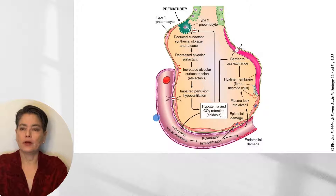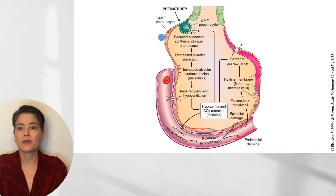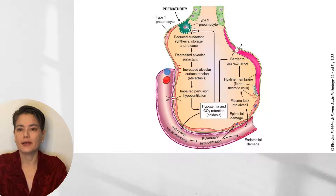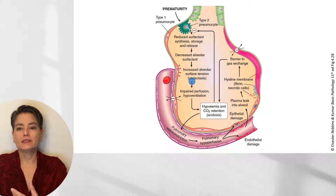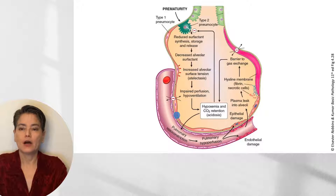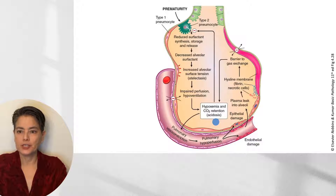Looking at a figure from Robbins and Kumar Basic Pathology: here is our alveolus with the type 2 pneumocyte in bright green, the pink type 1 pneumocyte, and our capillary. Because this is a premature infant, we have reduced surfactant synthesis, storage, and release, resulting in decreased alveolar surfactant. This increases alveolar surface tension, leading to atelectasis and collapse of alveoli, impaired perfusion, and hypoventilation — so we don't get gas exchange across the alveolar wall to our capillary, leading to hypoxemia and carbon dioxide retention.